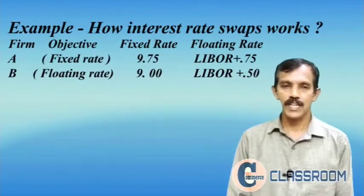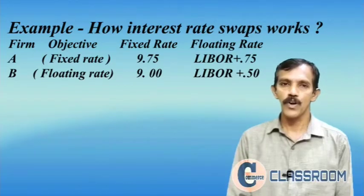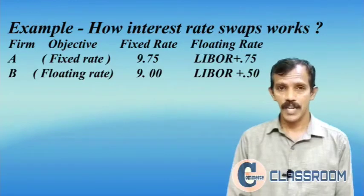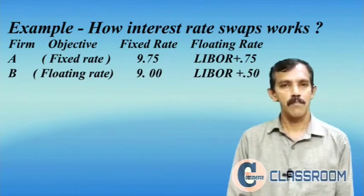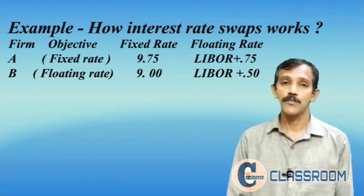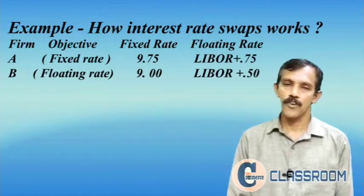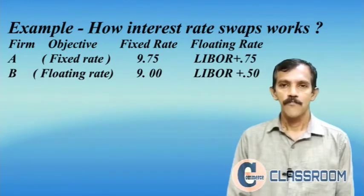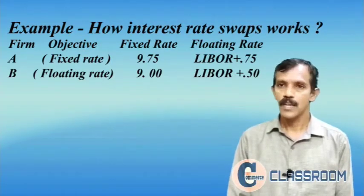Here we have two firms, Firm A and Firm B. The objective of Firm A is to borrow from the market at a fixed interest rate, and the objective of Firm B is to borrow from the market at a floating rate. If Firm A borrows from the fixed rate market they have to pay 9.75 percent, and if Firm A borrows from the floating rate market, Firm A has to pay LIBOR plus 0.75 percent. LIBOR is the London Interbank Offered Rate.